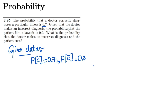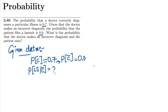Given that the doctor makes an incorrect diagnosis, the probability that the patient files a lawsuit is 0.9. So this is a conditional probability: the probability of a lawsuit given that the doctor made an incorrect diagnosis, i.e., given C complement, equals 0.9.